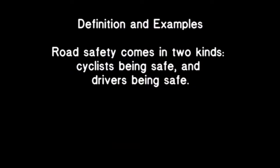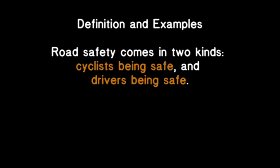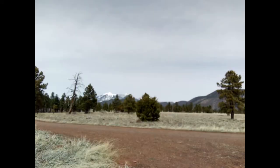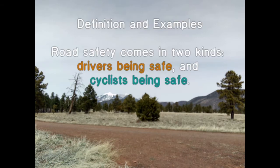Definition and examples: road safety comes in two kinds — cyclists being safe and drivers being safe. This part is the definition, and this part is the examples. At least we're sure that the two pieces of support are related; they're both kinds of road safety. But there's no reason why the two kinds are in this order. We can do better.